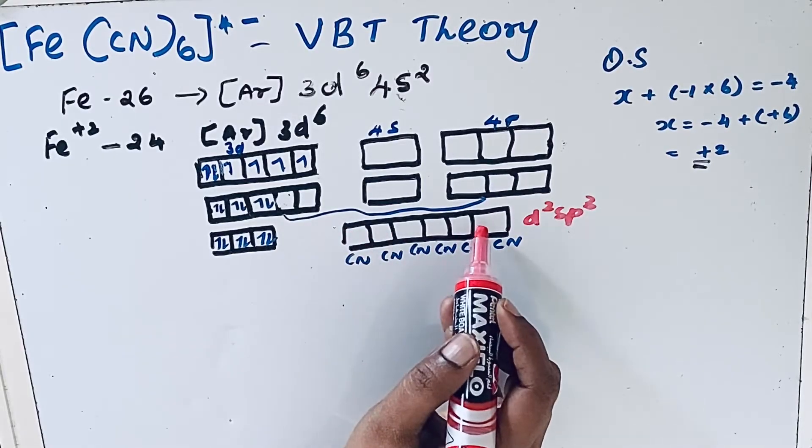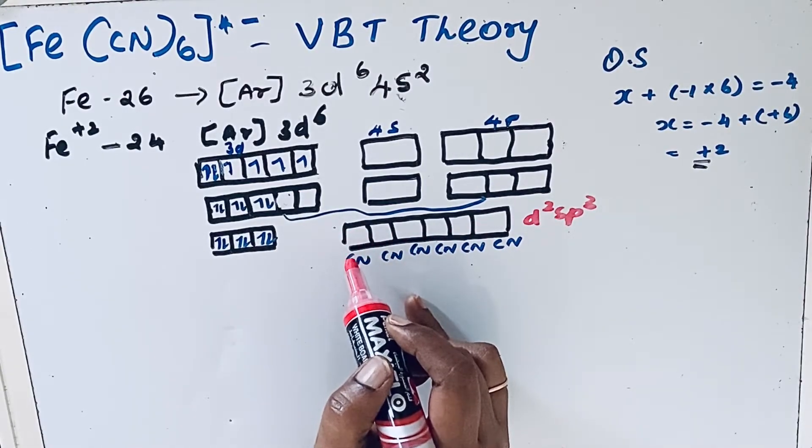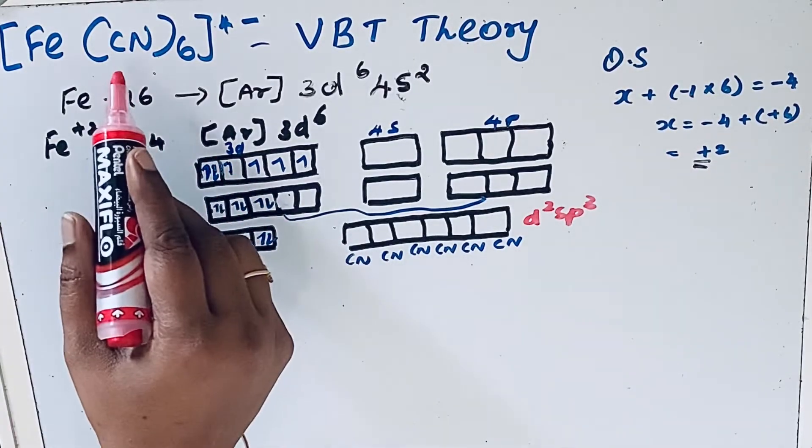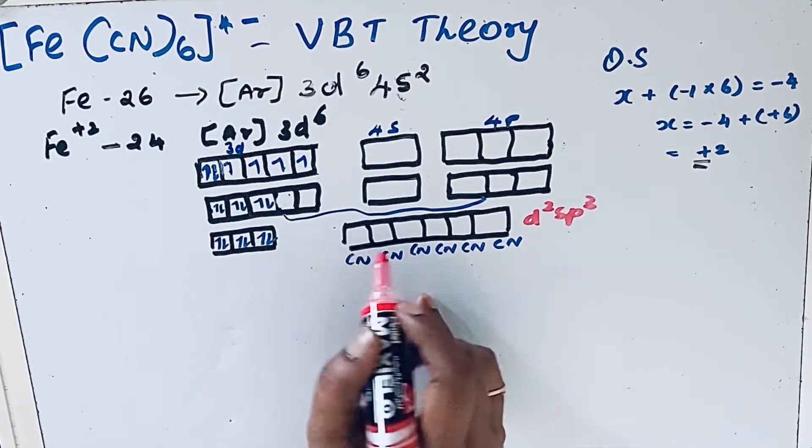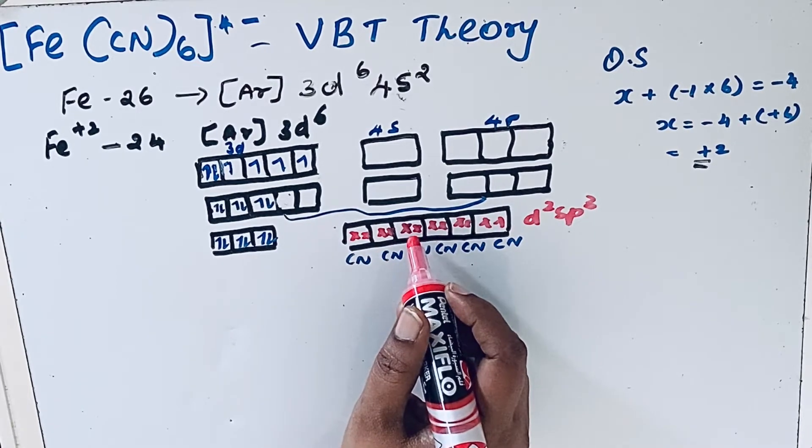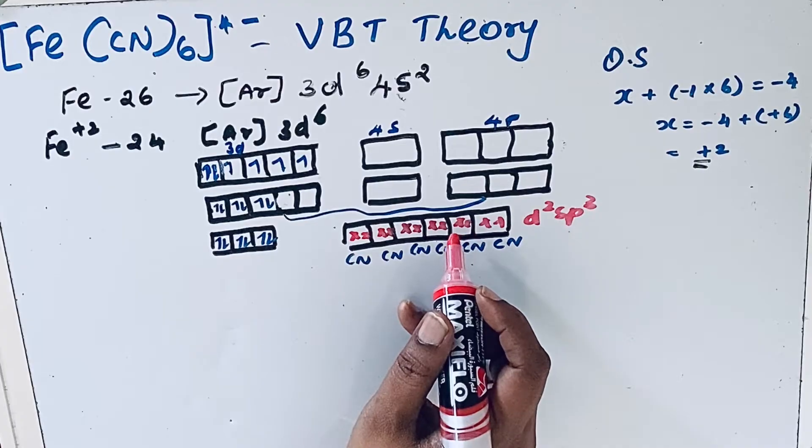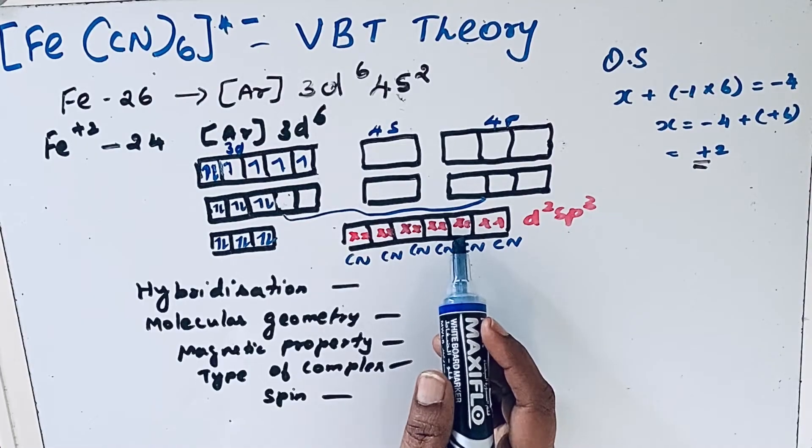These d2sp3 hybrid orbitals receive electrons from the cyanide ligands. Six cyanide groups are present, and in coordination complexes, ligands donate electrons for bond formation. The hybridization is d2sp3.